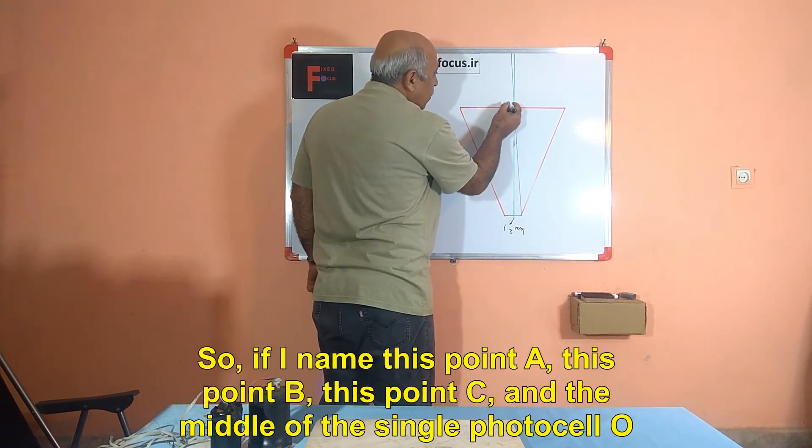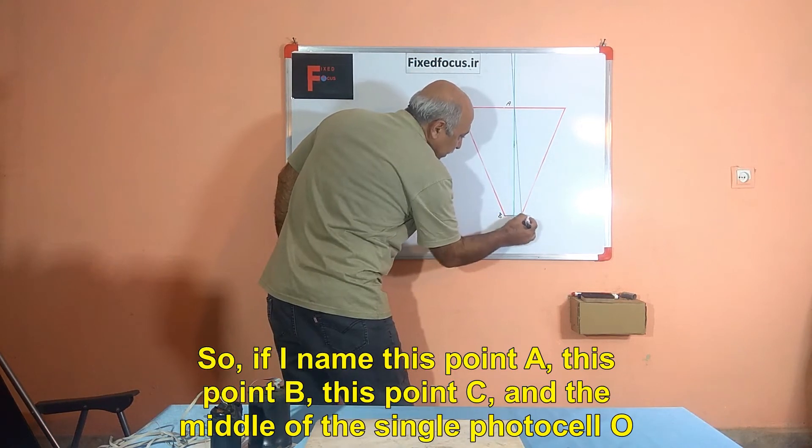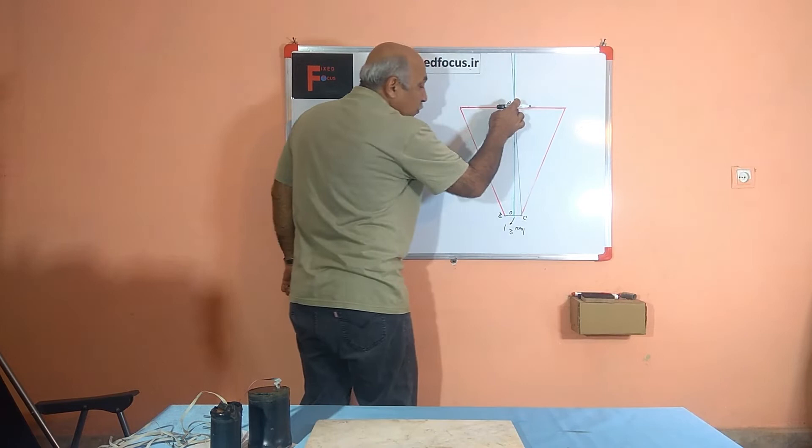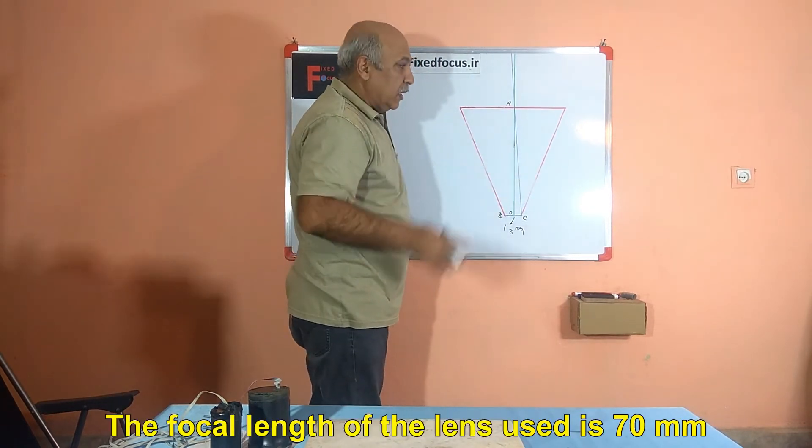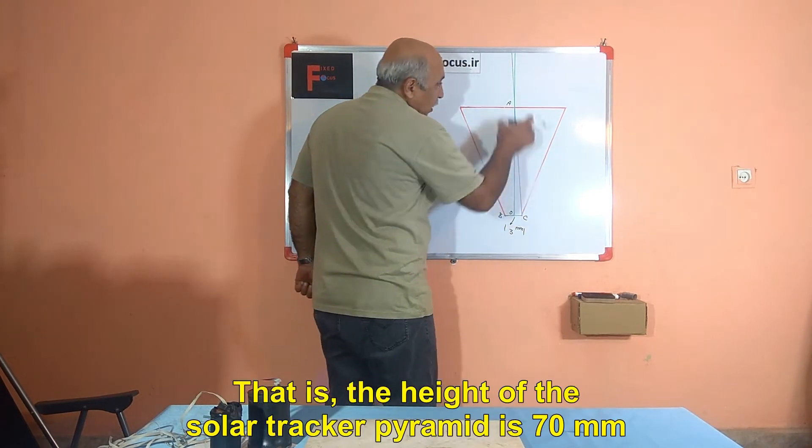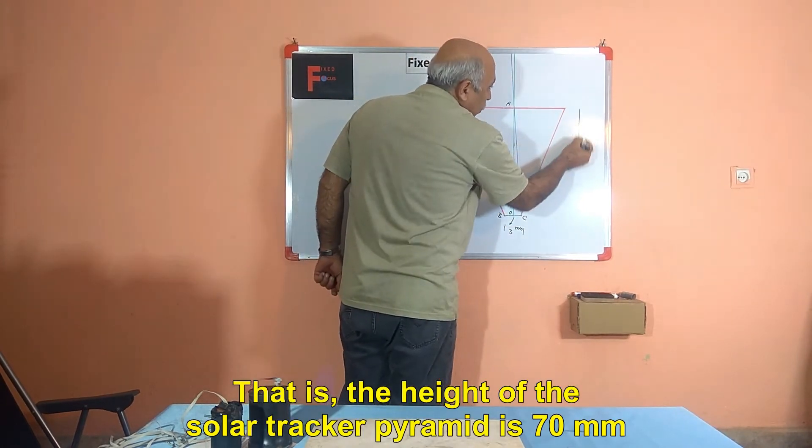So, if I name this point A, this point B, this point C, and the middle of the single photocell O. The focal length of the lens used is 70 millimeters. That is, the height of the solar tracker pyramid is 70 millimeters.